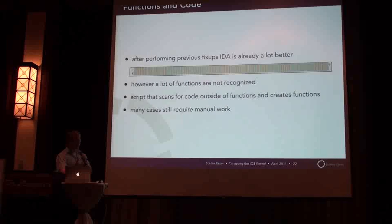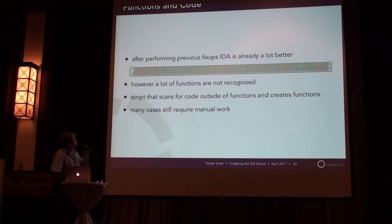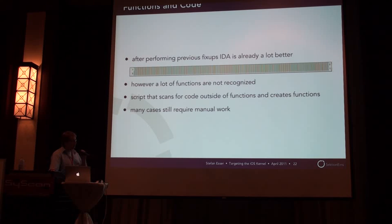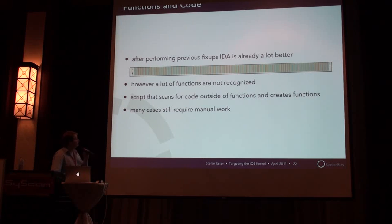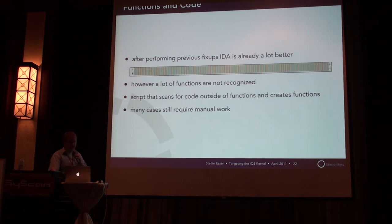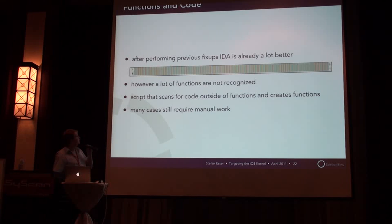After all this, you will see that IDA already performs a lot better and the view looks completely different. However, there are still a lot of functions that are not recognized — there's code outside of functions. So you have to write another script that scans all the code, and if it's outside of a function it tries to make it one. It will fail on some corner cases you have to do manually, but in the end you have a very usable IDA database.